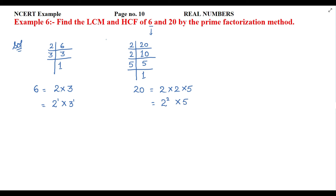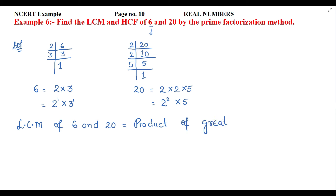Now the first thing we have to find out is the LCM. LCM of 6 and 20 — LCM means least common multiple. To find the LCM, you write the product of the greatest power of each prime factor.